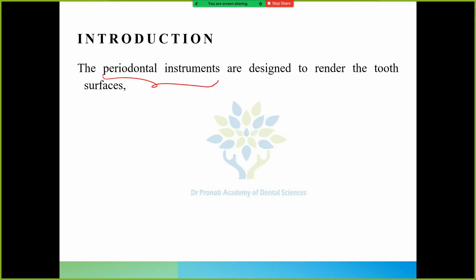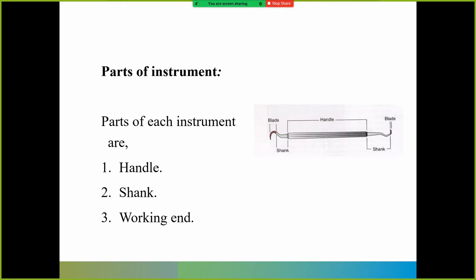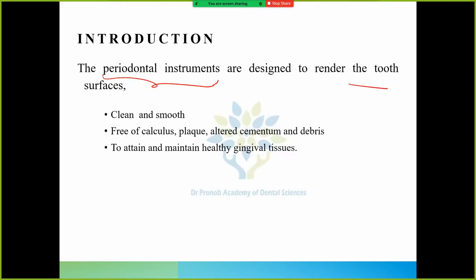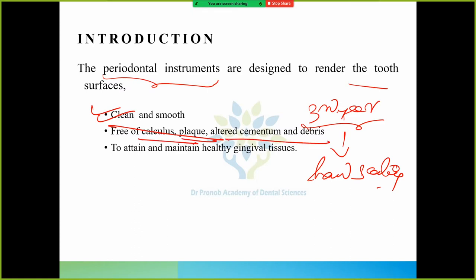Introduction: The periodontal instruments are designed to render the tooth surface clean and smooth, free of calculus, plaque, altered cementum, and debris, to attain and maintain healthy gingival tissue. Why do we use periodontal instruments? Third year people are doing hand scaling right now. We use them to clean and smooth surfaces, free calculus, plaque, altered cementum and debris. When you become intern, then you work with cementum also to maintain healthy gingival tissues.